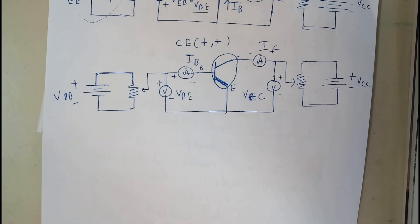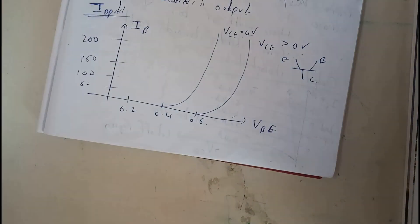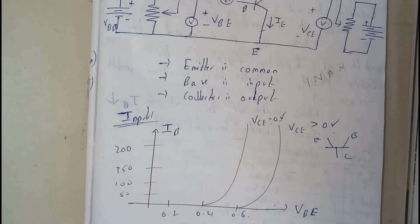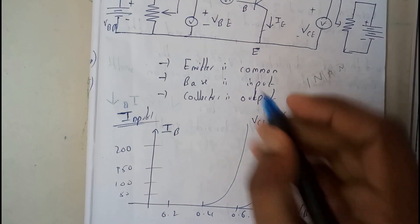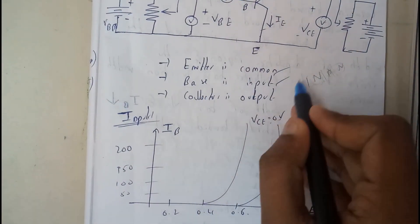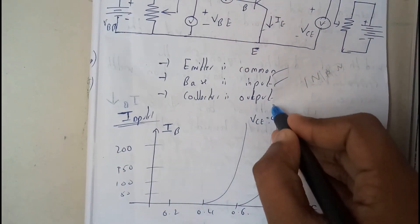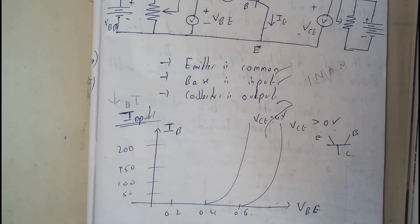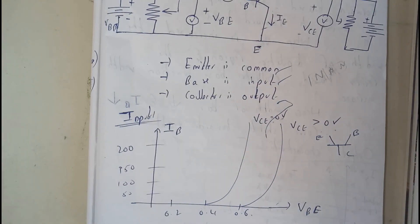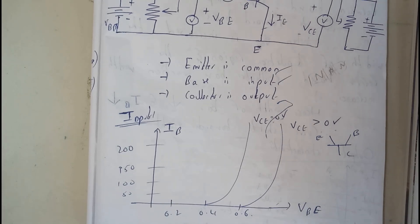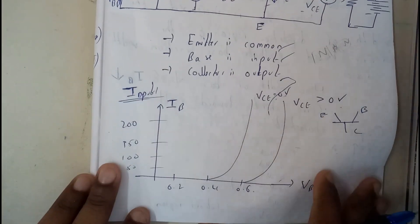From the diagram you can directly say that emitter is common, base is input, and collector is output. Our diagram is successfully designed.